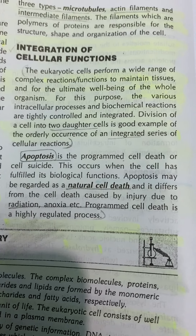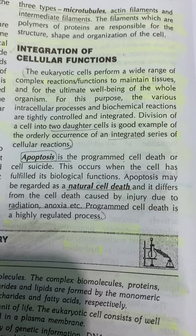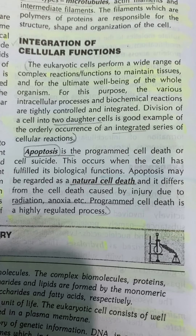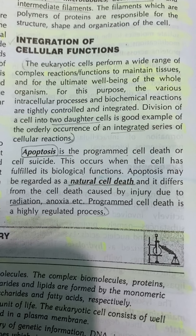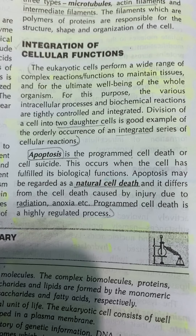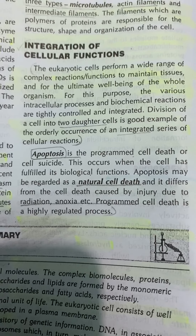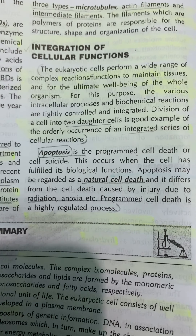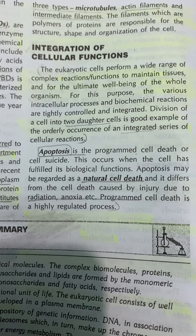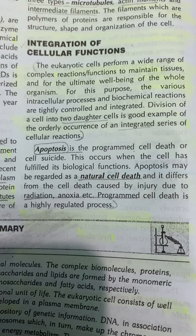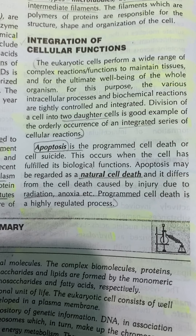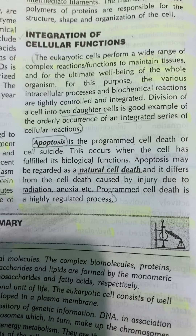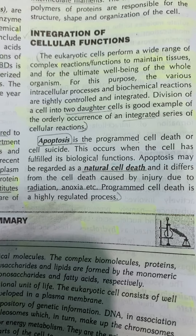Eukaryotic cells perform a wide range of complex functions to maintain tissues and for the ultimate well-being of the whole organism. Various intracellular processes and biochemical reactions are tightly controlled and integrated. Division of a cell into two daughter cells is a good example of an integrated series of cellular reactions. Apoptosis is programmed cell death, or cell suicide, which occurs when the cell has fulfilled its biological function. It differs from cell death caused by injury, radiation, or anoxia, and is a highly regulated process.